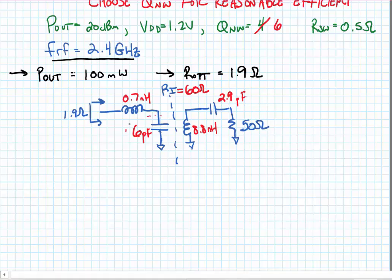The last thing we do is combine these two susceptible components, the capacitor and the inductor in parallel. The net is a capacitor that has a value of about 5.5 picofarads.